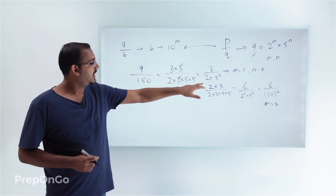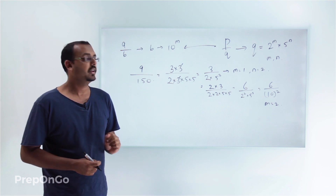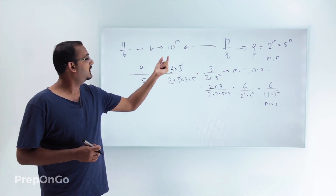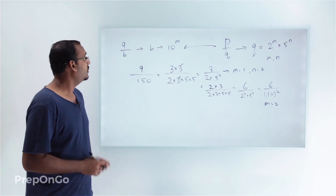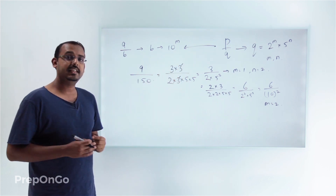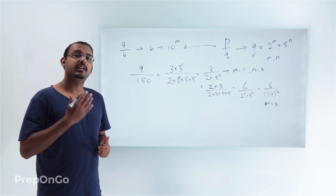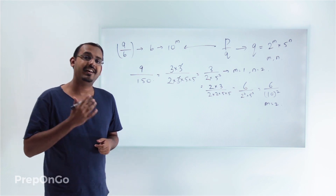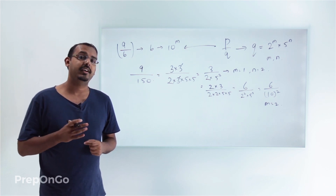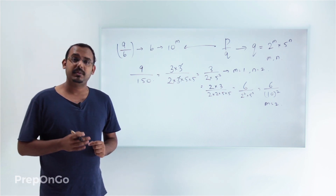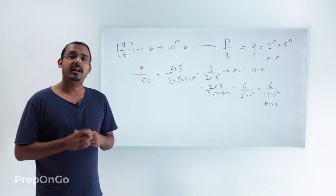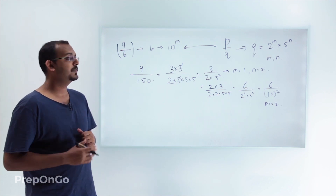Any such rational number with denominator in the form 2^m × 5^n can, with some manipulation, be represented with denominator of the form 10^m. And wherever the denominator is of the form 10^m, we can say the rational number will have a terminating decimal point. This proves the corollary of our theorem: for x being a rational number with a terminating decimal expansion, x can be represented as p by q where p and q are co-prime and q is 2^m × 5^n with m and n non-negative integers.